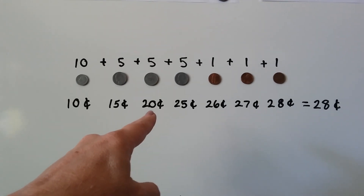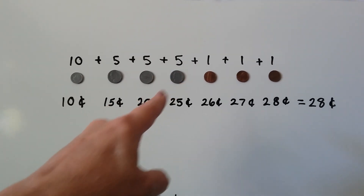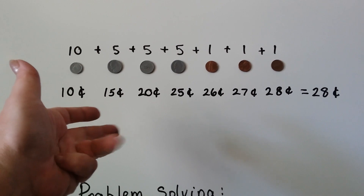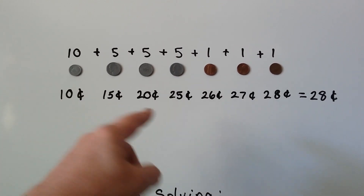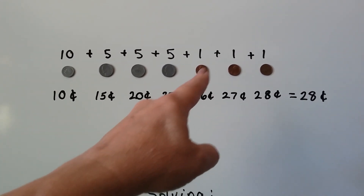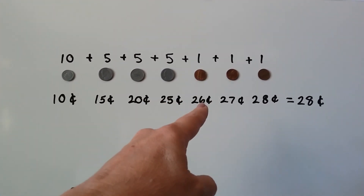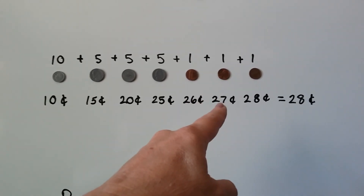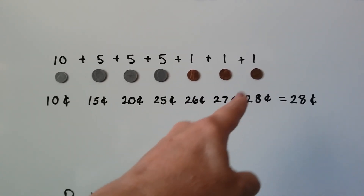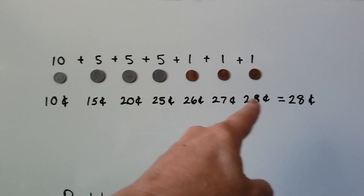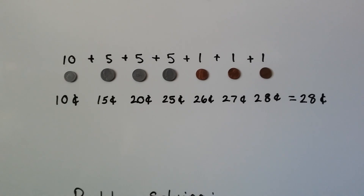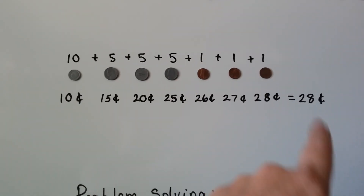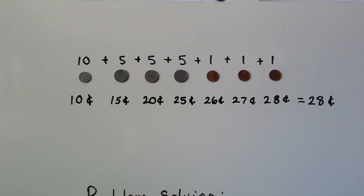Now we're at twenty. We add five more: twenty-one, twenty-two, twenty-three, twenty-four, twenty-five. Now we're at twenty-five. We add one — we're at twenty-six. We add one — we're at twenty-seven. We add one — we're at twenty-eight. And these seven coins equal twenty-eight cents.